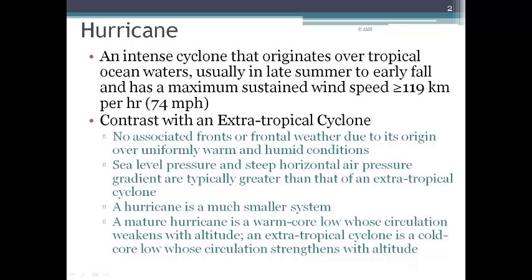A mature hurricane is what we call a warm core low, whose circulation weakens with altitude. Whereas with the mid-latitude cyclone, it's a cold core low whose circulation strengthens with altitude.